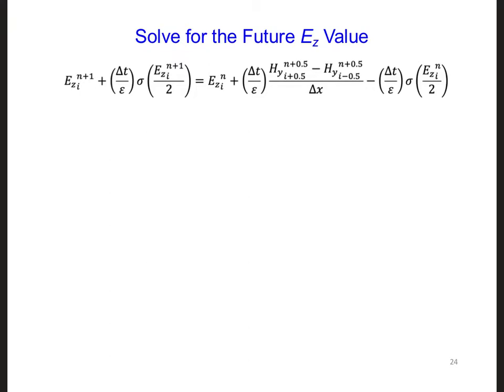Here I've moved both of the n plus 1 Ez terms to the left. And I haven't quite combined these two yet, but let's go ahead and combine these. So first on the left side, we have n plus 1. And if I'm going to combine these two terms, I get 1 plus delta t over epsilon times sigma. And there's also a 2 there, so I'll put that right there.